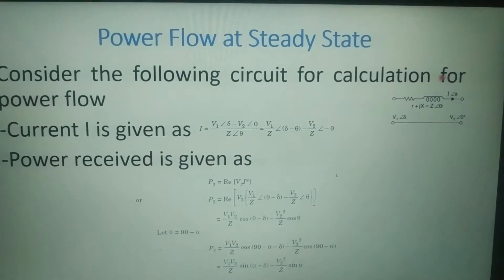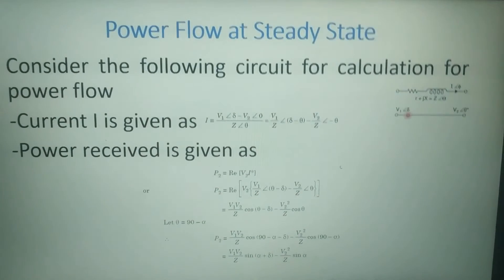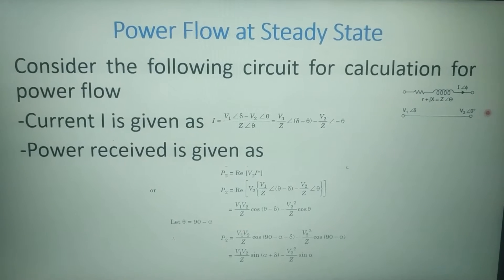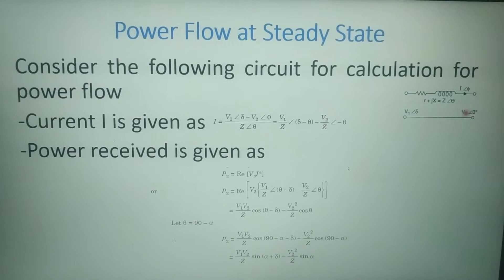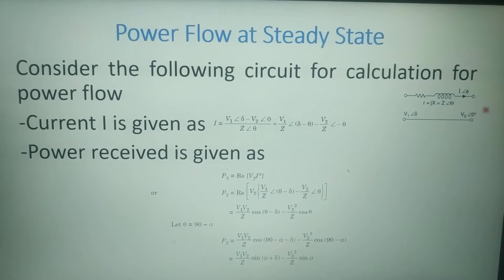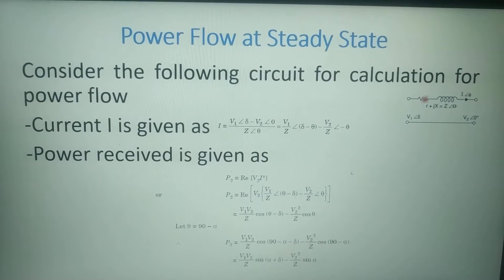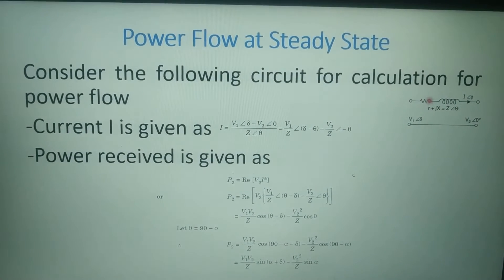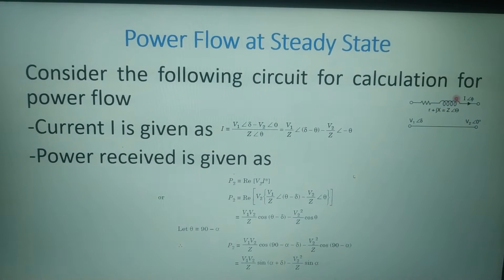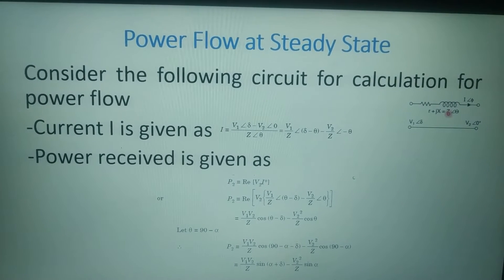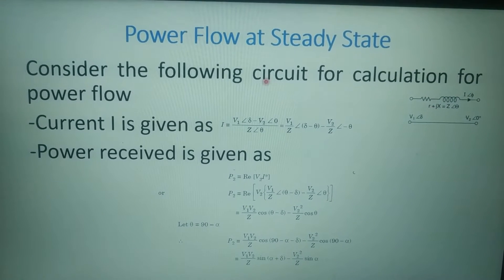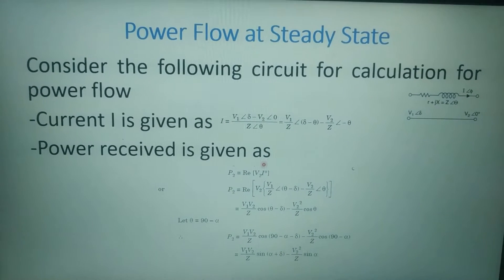Consider this circuit here. V1 is the sending end voltage at an angle delta. V2 is the receiving end voltage — we have considered it as a reference voltage at angle 0 degree. I is the current flowing through this line. R is the line resistance and this is the line reactance. So Z, the total line impedance, is equal to R plus jX.